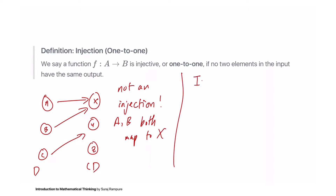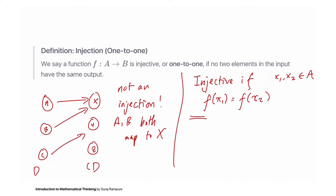Formally, we say a function is injective if f(x1) = f(x2), where x1 and x2 are in the input, implies that x1 is equal to x2. This symbol means 'implies' — we'll talk more about it when we get to propositional logic.